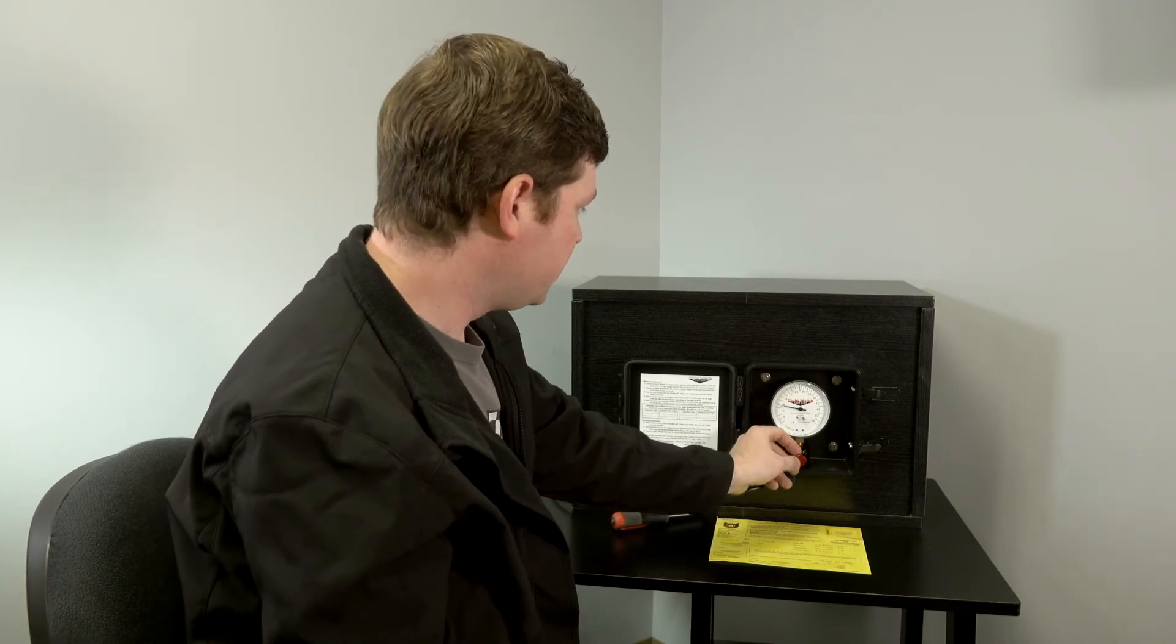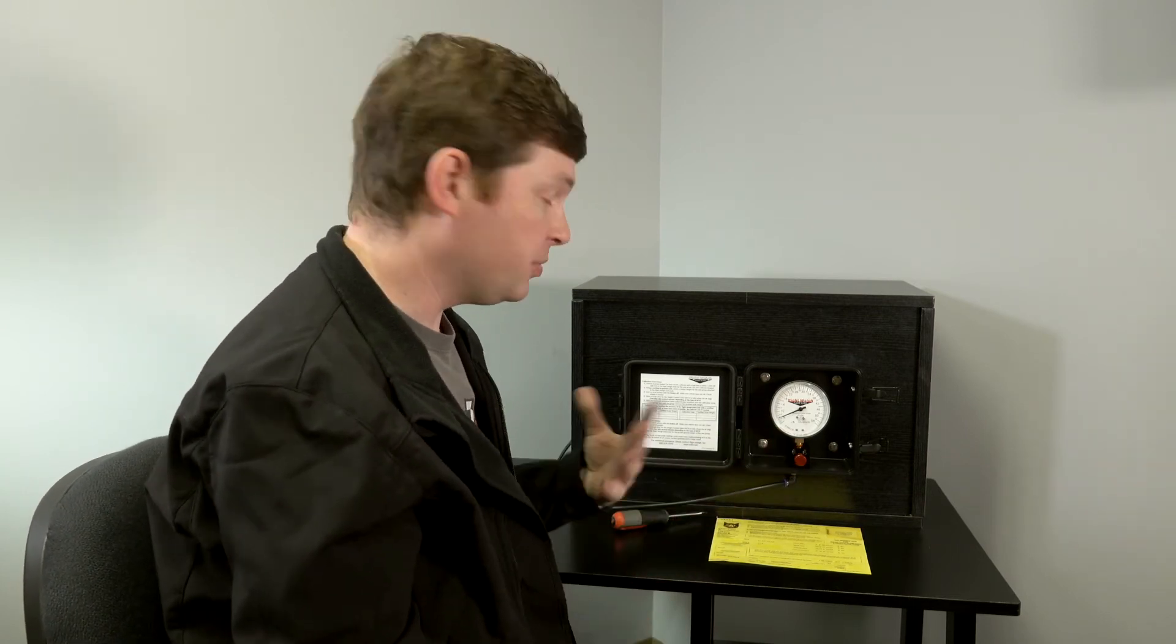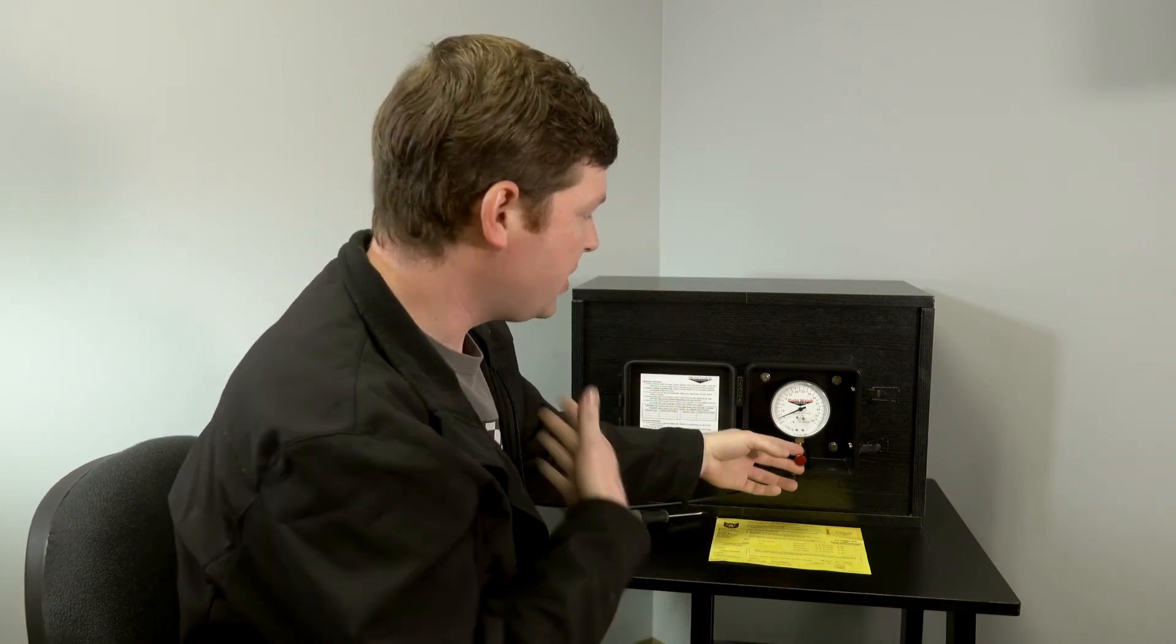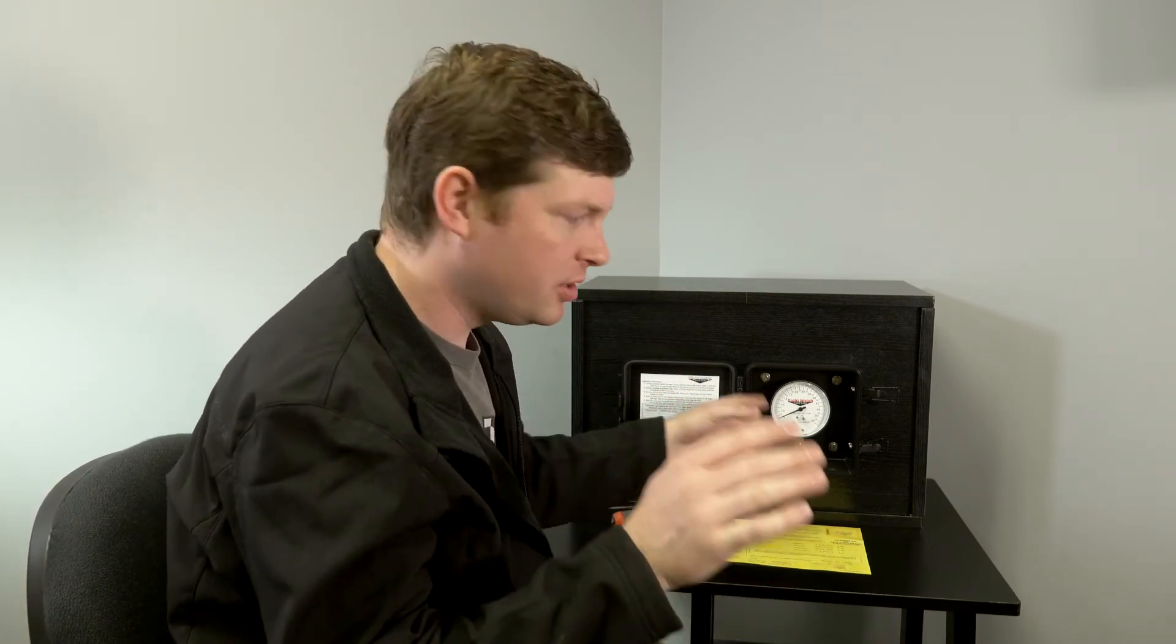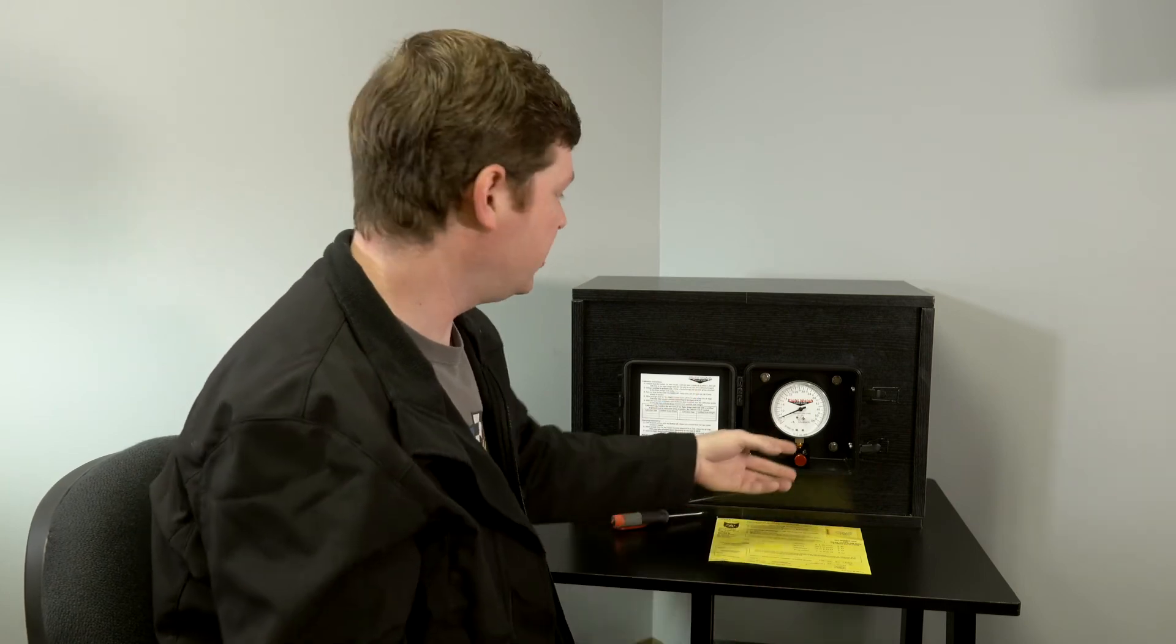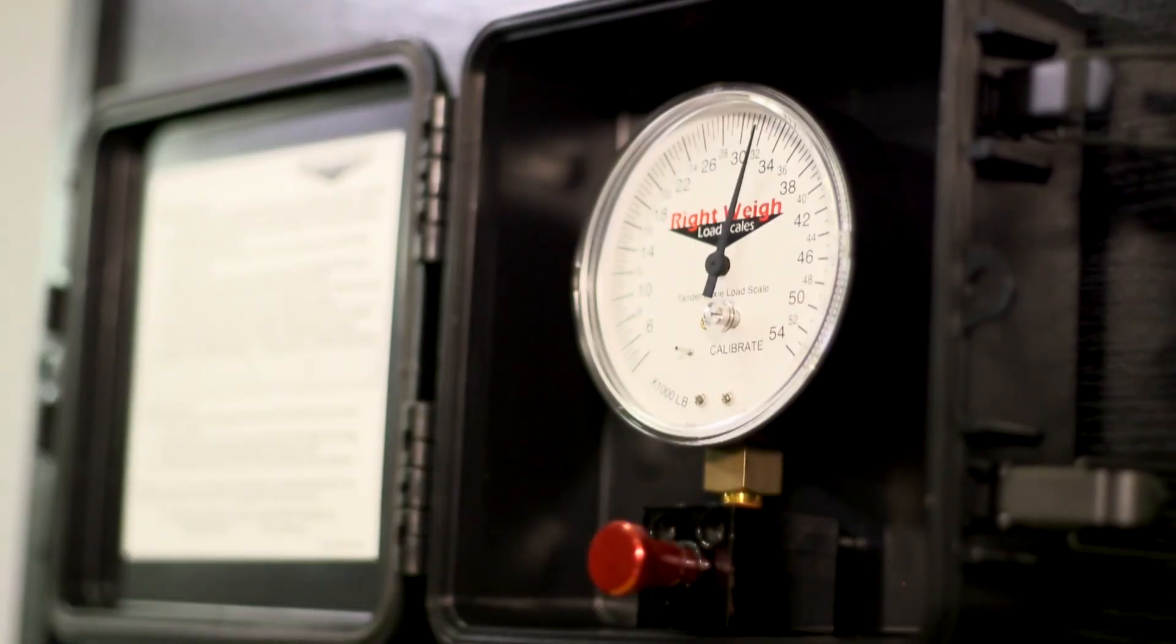Now, same thing if you want to use the gauge. Let's say you've got another load, same thing. You come out here, flat level ground, dump some air out of the suspension, let it refill, pull the valve out, and it'll come up and show you what weight you've got on your trailer.